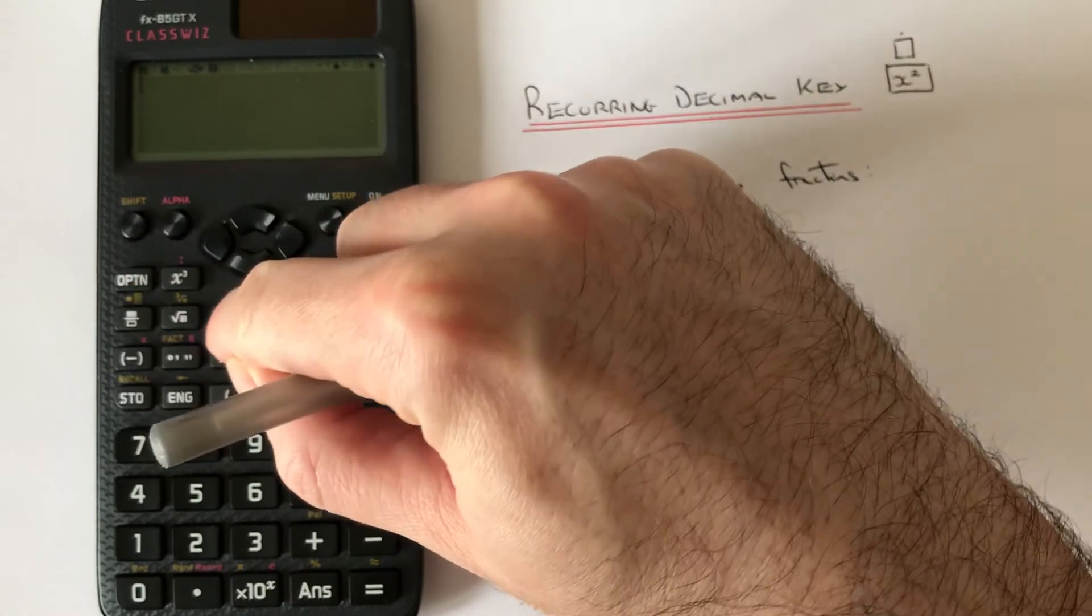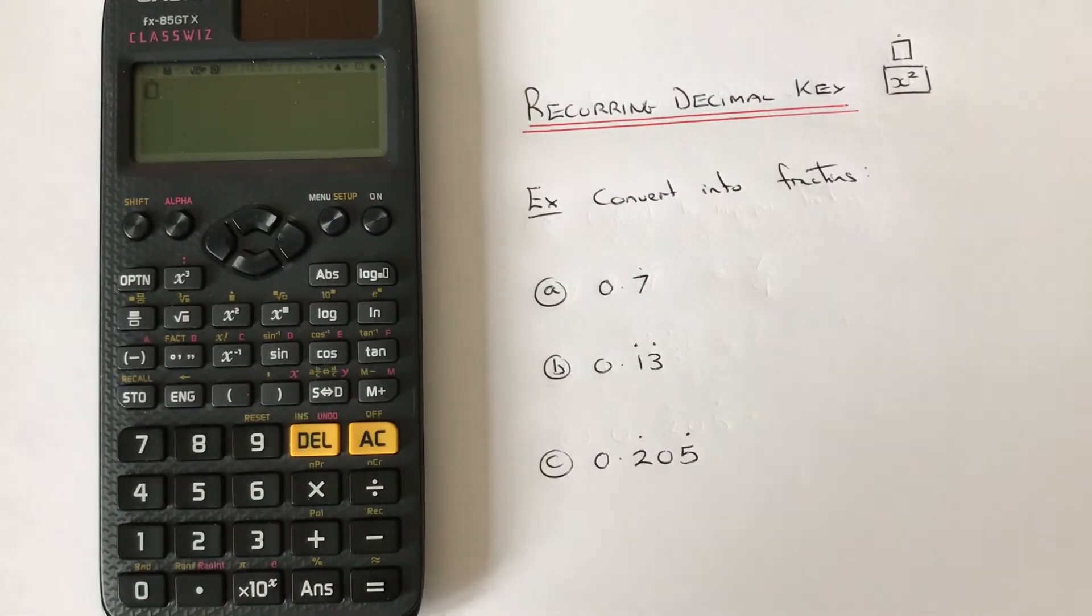Let's have a look at example 1. We've got 0.7 recurring, so press 0 first, then the decimal point, then press shift x squared.